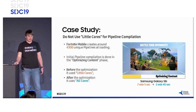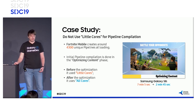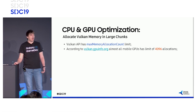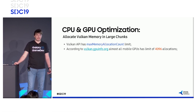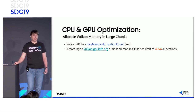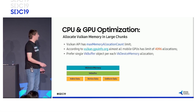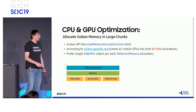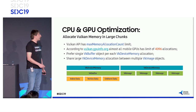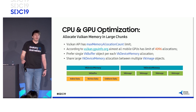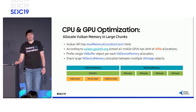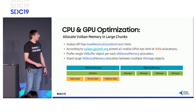Now briefly about memory. Allocate Vulkan memory in large chunks and then do sub-allocations. Prefer a single buffer per each allocation and then use the offset mechanism to subdivide it into virtual resource buffers. Share a large allocation between multiple images. Doing this will improve cache efficiency and won't exceed the allocation limit.